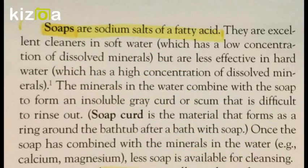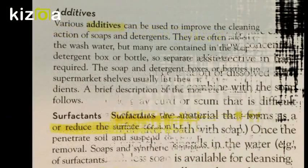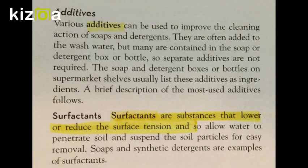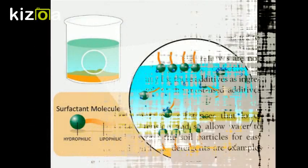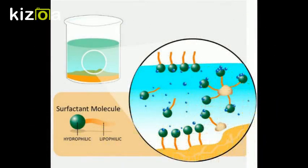Similarly, surfactants are barely even brushed over and are simply defined as a substance that lowers or reduces the surface tension of water, allowing it to penetrate the soil. This is a terrible description of what surfactants and soaps really do for the laundering process, and so I'd like to shed a little more light on them.